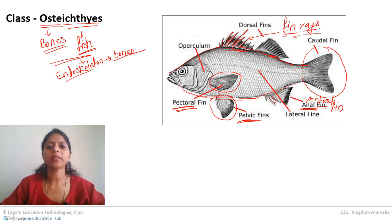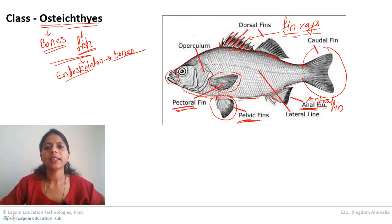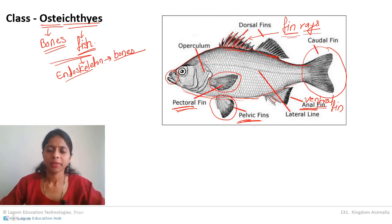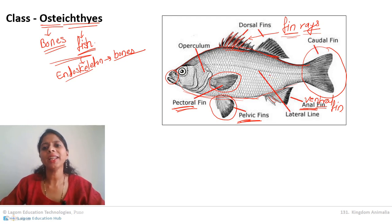The fourth characteristic is about the digestive system. The mouth is terminal — always at one end of the fish. The alimentary canal ends and opens as an anus. Remember, in Chondrichthyes it opened as a cloacal aperture, but in bony fish it opens as the anus.